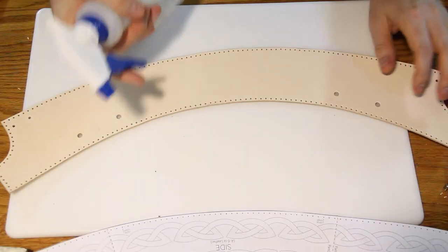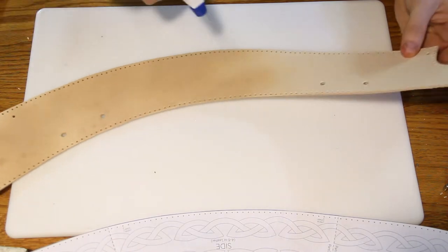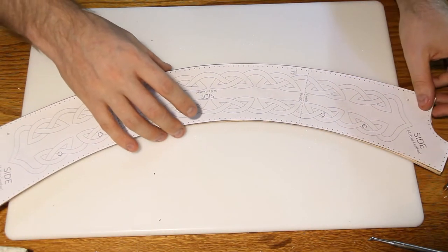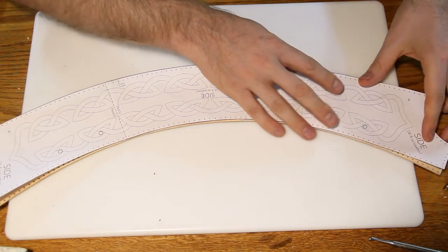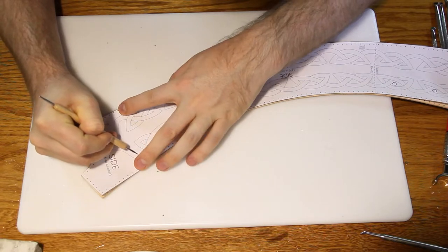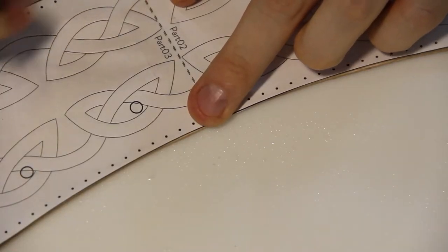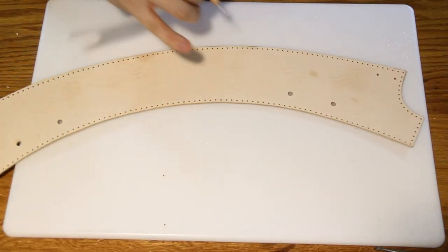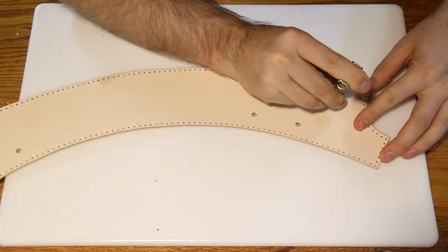If you plan on doing a carving, now's the time to do so. Start by taking a spray bottle or a damp sponge and wetting the leather. It just needs to be damp, it does not need to be soaking wet. The tool I'm using is called a stylus. It's got a rounded tip so it doesn't cut into the leather. This is just to leave an outline of where your pattern is.